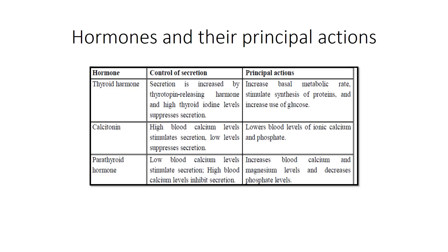Thyroid hormone stimulates synthesis of proteins and increases use of glucose. Calcitonin lowers the blood level of calcium and phosphate. Parathyroid hormone, PTH, increases blood calcium and magnesium levels both, while it decreases phosphate levels.